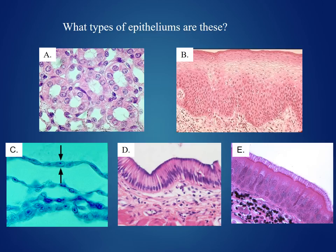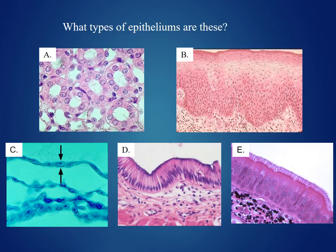Looking at image B: how many layers? This appears to be stratified. What types of cells are on the apical surface? They appear to be squamous. We have two types of stratified squamous epithelium, so is this non-keratinized or keratinized? The nuclei are visible throughout all layers of this tissue, suggesting the cells are living. This means this is non-keratinized stratified squamous epithelium.